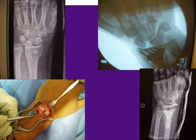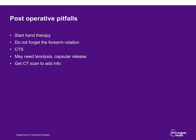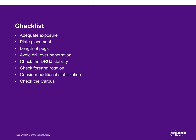Postoperatively, start therapy, work on forearm rotation, and watch for carpal tunnel syndrome. Stiff fingers may need capsular releases and tenolysis if hand therapy is not successful, and a CT scan can sometimes be helpful. Checklist: adequate exposure, good plate placement with appropriate peg length, avoid drill penetration, check the DRUJ and forearm, provide additional stabilization or immobilization if needed, and always check the carpus.